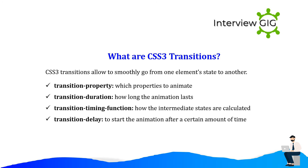What are CSS3 transitions? CSS3 transitions allow you to smoothly go from one element's state to another. Transition properties include: transition-property — which properties to animate; transition-duration — how long the animation lasts; transition-timing-function — how intermediate states are calculated; transition-delay — to start the animation after a certain amount of time.